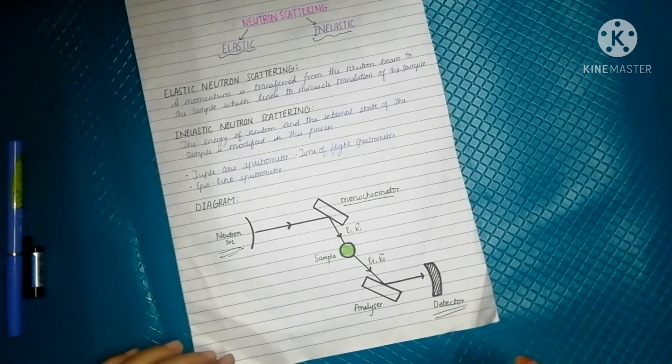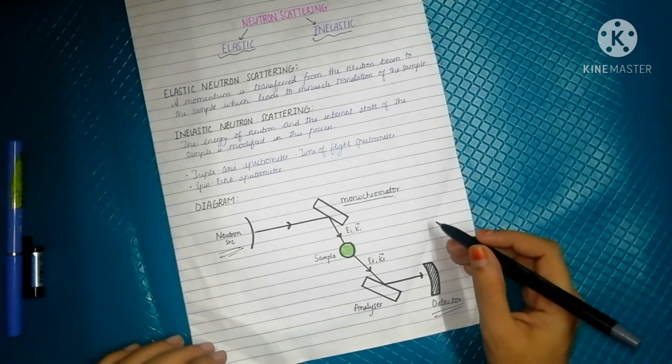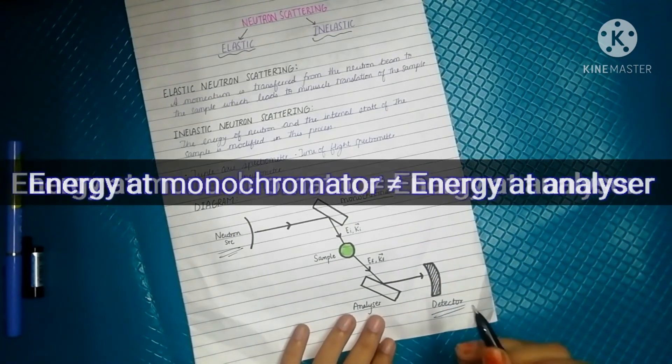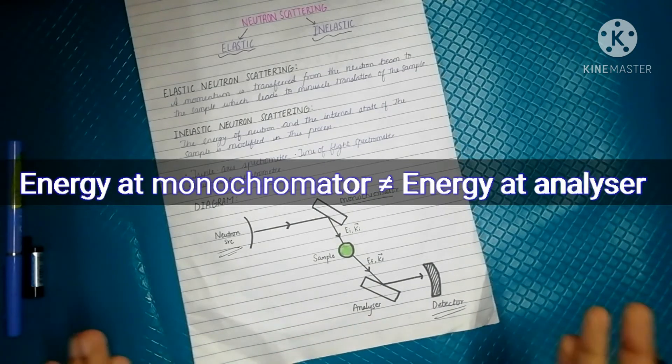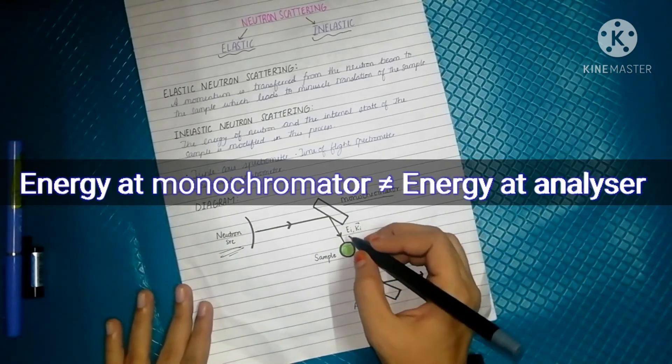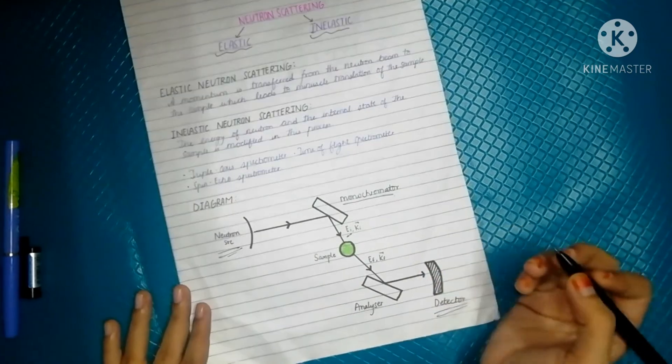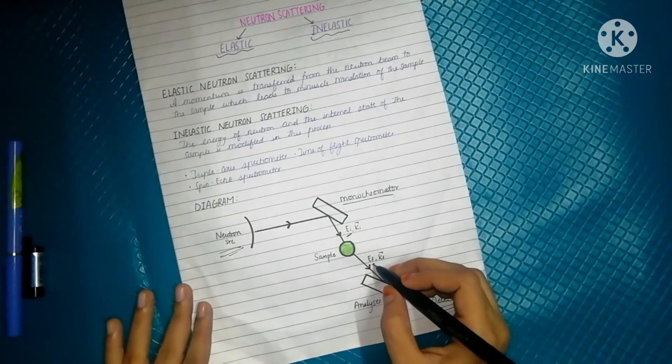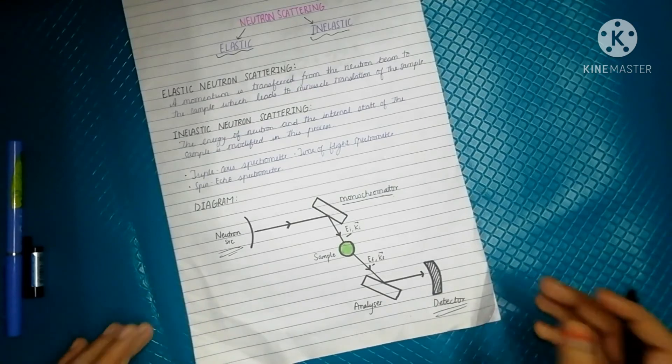Now if the monochromator and analyzer are showing different energies, then we can say this is an inelastic event. As you can see, the energy here is represented by E_i, that is incident, and here it is E_f, representing final state.